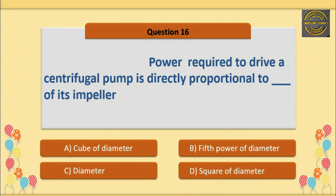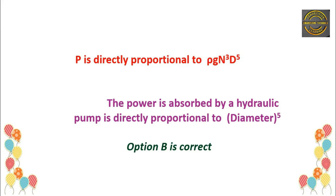Q16. Power required to drive a centrifugal pump is directly proportional to the — option B is correct — fifth power of diameter of its impeller. Explanation: Power P is directly proportional to ρ g N³ × D⁵. The power absorbed by a hydraulic pump is directly proportional to diameter to the power 5. Option B is correct.